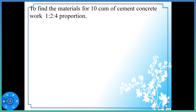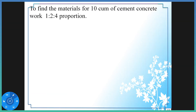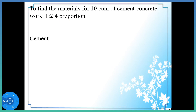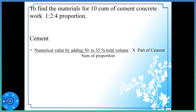This proportion can be used to find out cement, sand, and aggregate. Cement is equal to the numerical value by adding 50 to 55 percent of total volume, divided by the sum of proportions, into the part of cement.